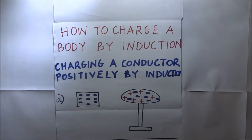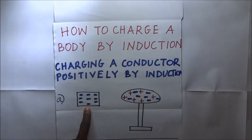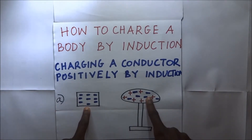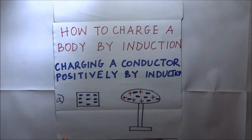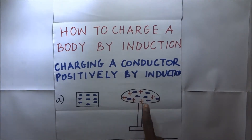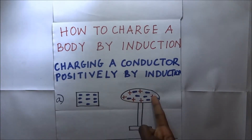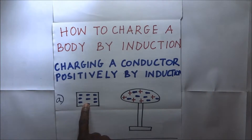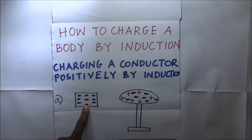Welcome to Kisembo Academy. In the first case, we get to see how to charge a body positively by induction. In our first diagram, we have a body that is negatively charged, and we have a conductor placed on top of an insulated stand. This conductor has both positive and negative charges, so it is neutral.